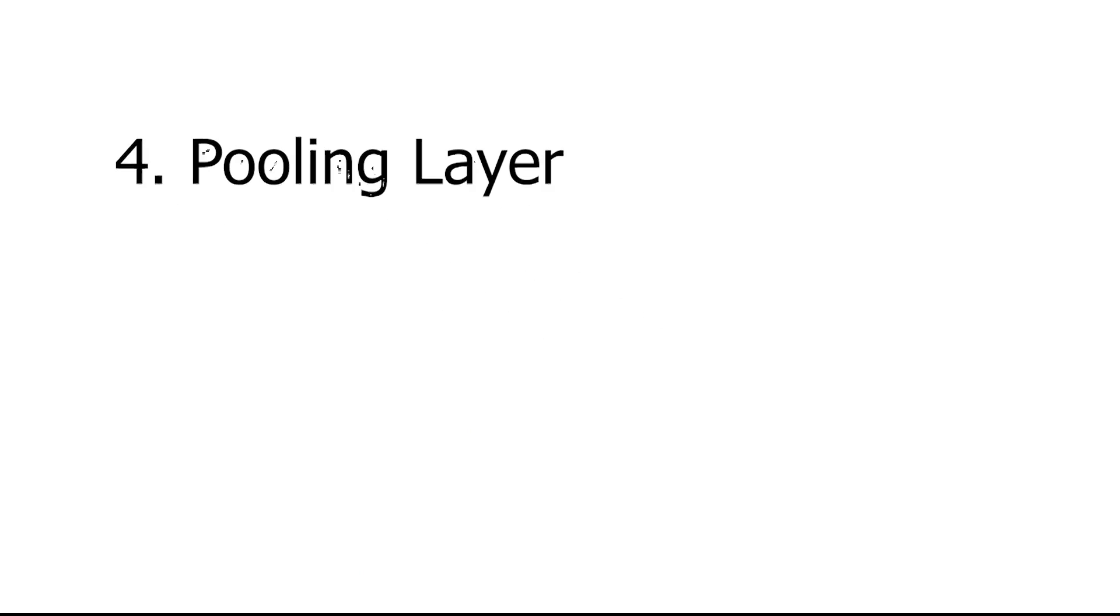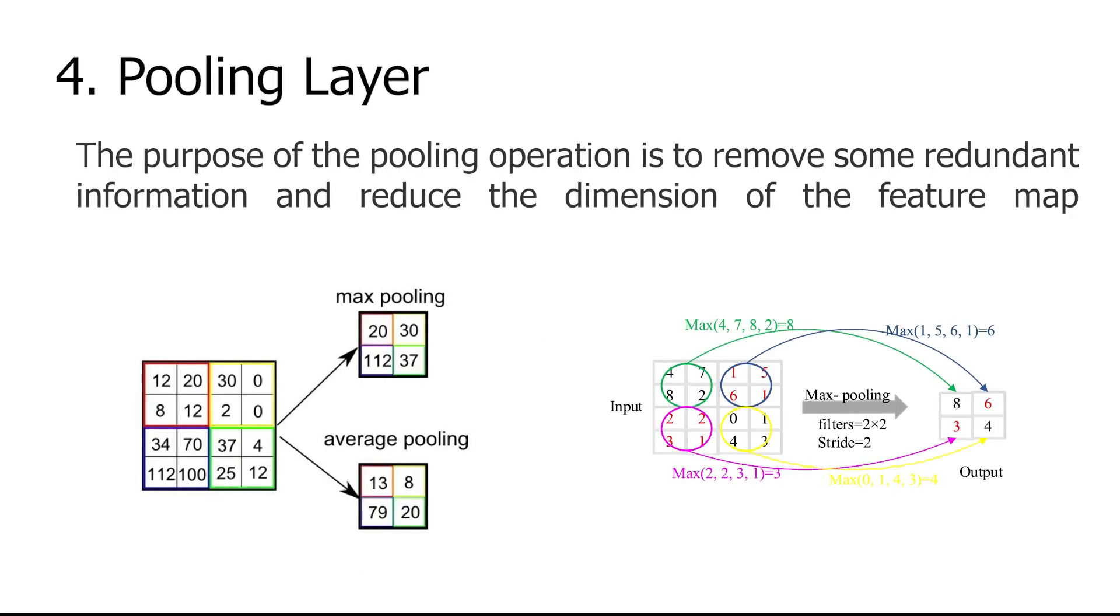The feature map obtained after the input image passes through the convolution layer, if directly expanded to do classification or other tasks, results in a large amount of calculation. The purpose of the pooling operation is to remove some redundant information and reduce the dimension of the feature map, which can reduce the features, thereby reducing the amount of calculation and effectively avoid overfitting.